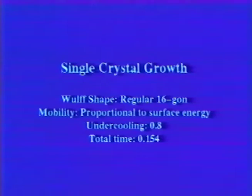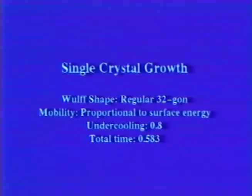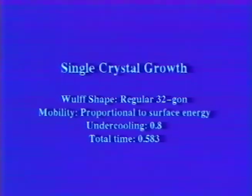By using a wolf shape with many sides, we can approximate a smooth energy functional. In the next example, the wolf shape is a regular 16-gon. Note the dense branching growth. In this final example of single crystal growth, the wolf shape is a regular 32-gon, and so the energy is very nearly isotropic.